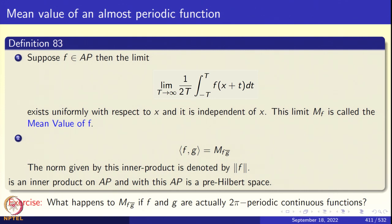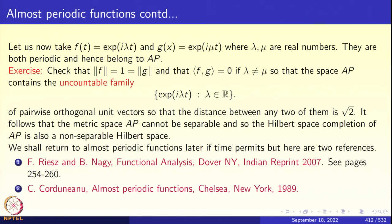As a simple exercise: suppose f and g are actually 2π-periodic continuous functions. Then the mean value M(f·g-bar) will be the usual L2 inner product of f and g that we studied in the first chapter. Now take the example f(t) = e^{iλt} and g(t) = e^{iμt}, where λ and μ are real numbers. Check that they are almost periodic — they are actually periodic, and so they are almost periodic.